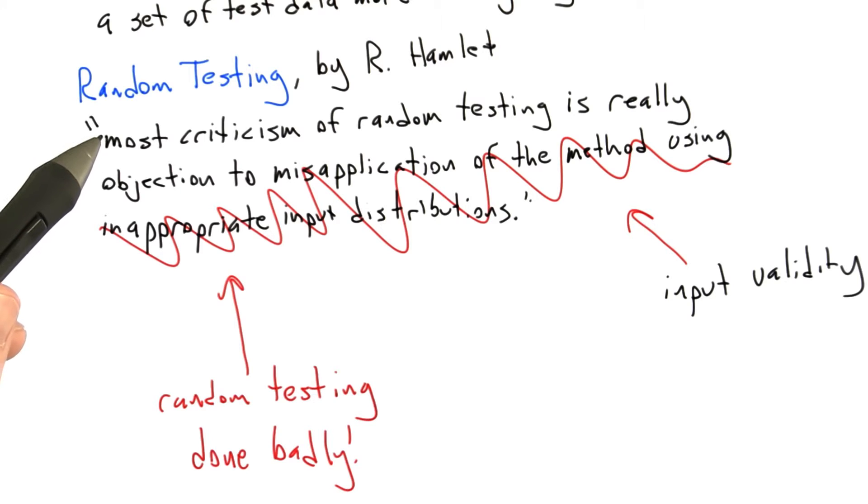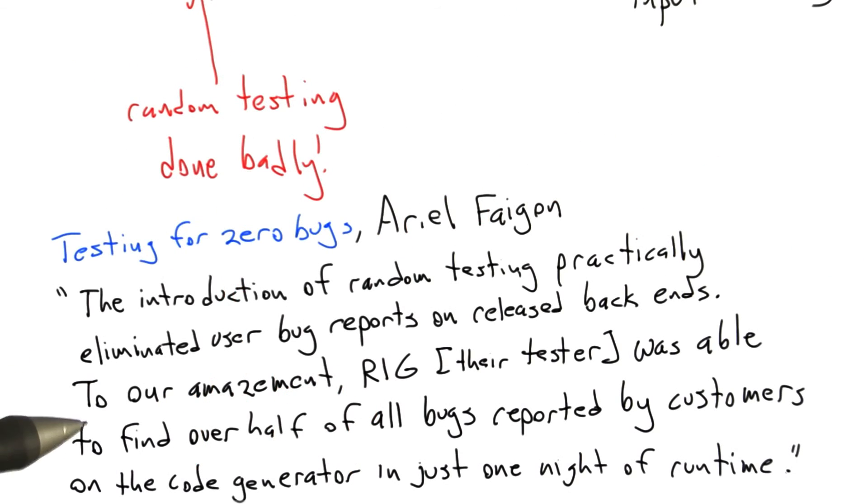And so I would actually say what Hamlet said a little bit differently. Most criticism of random testing is really objection to random testing done badly. So let's look at one more quote. So what the author of Testing for Zero Bugs has to say is, the introduction of random testing practically eliminated user bug reports on released backends. To our amazement,